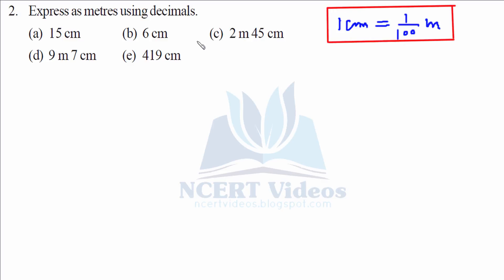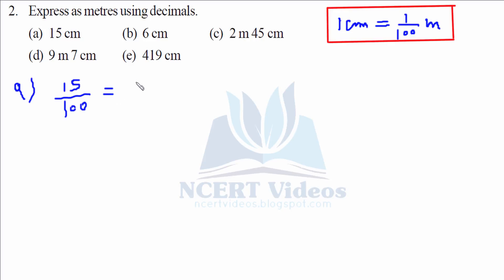Question 2: Express as meters. Now we have to convert centimeters into meters. The conversion factor is 1 centimeter equals 1 over 100 meters. For part a, 15 over 100 gives you 0.15 meters.